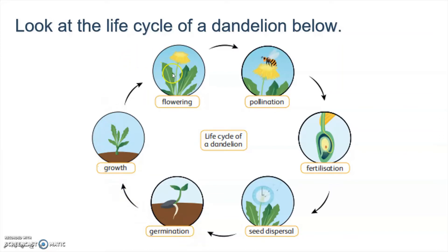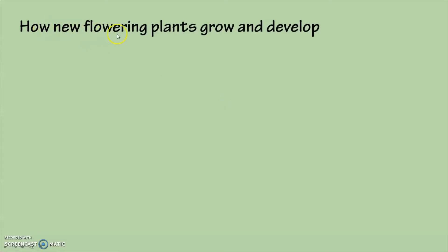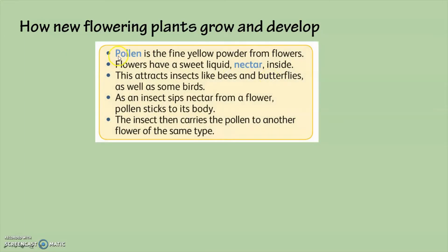The plant then has a flower again, completing the cycle. Now, how do new flowering plants grow and develop? First, pollen — pollen is the fine yellow powder from flowers. Flowers have a sweet liquid called nectar inside them. This attracts insects like bees and butterflies, as well as some birds.